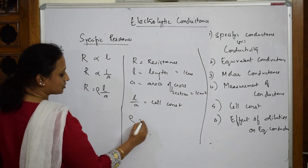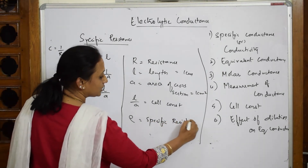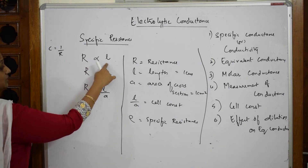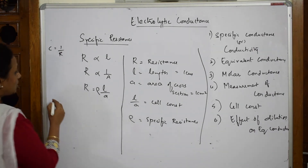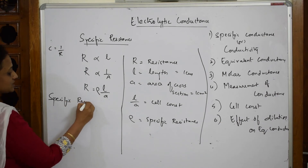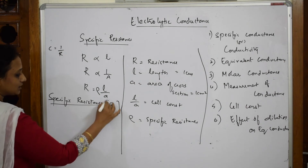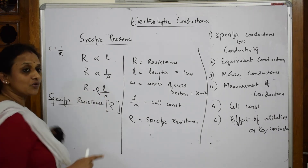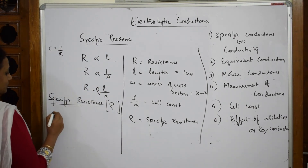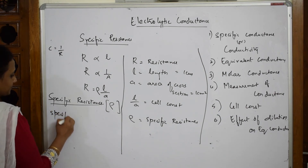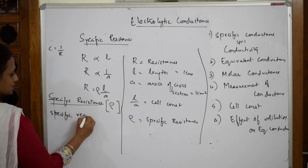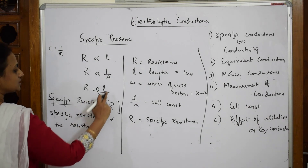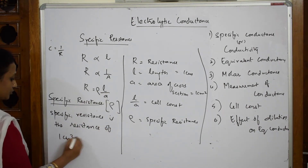Rho is called specific resistance. Specific resistance is the resistance of one centimeter cube of a conductor. That is the definition of specific resistance.